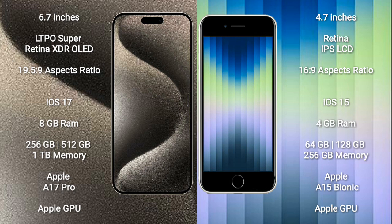iPhone AC comes with 4GB RAM and 64GB, 128GB, or 256GB internal storage options, powered by the Apple A15 Bionic Processor with Apple GPU graphics.